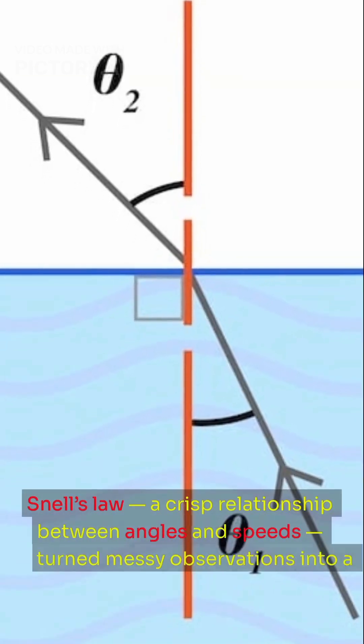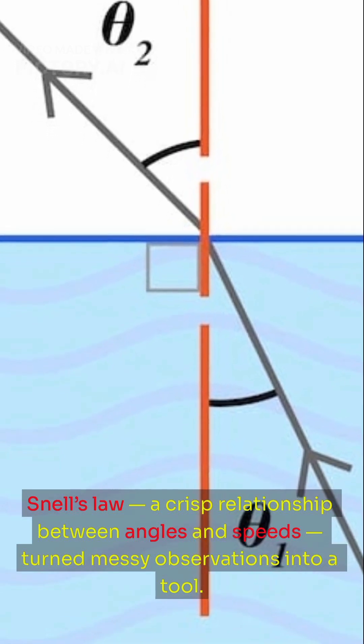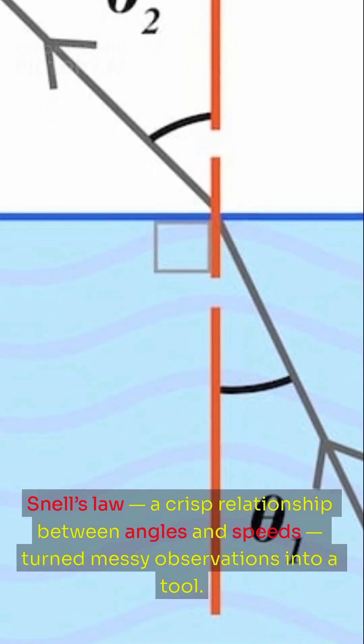Snell's law, a crisp relationship between angles and speeds, turned messy observations into a tool.